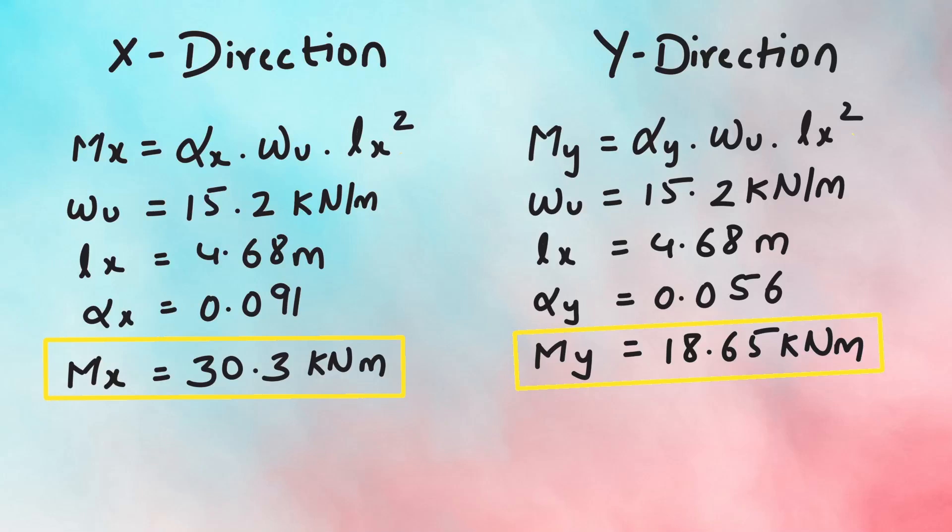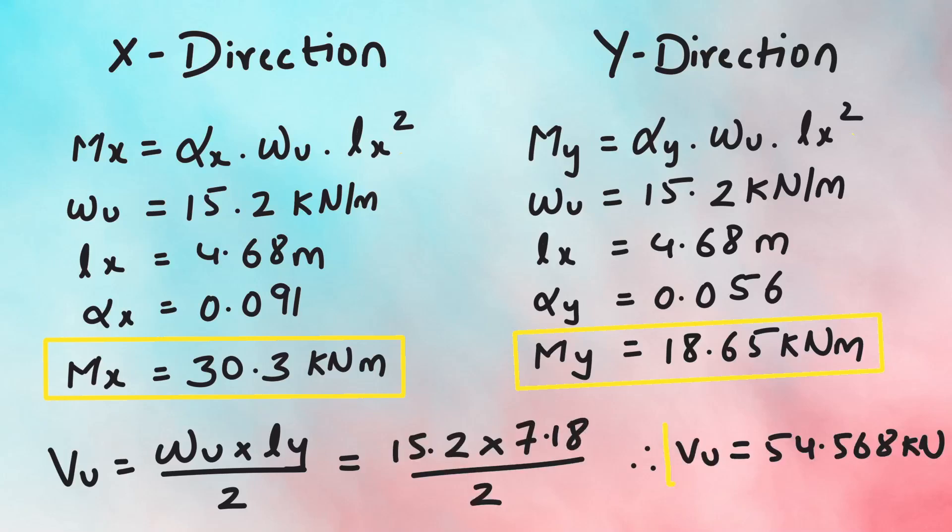The ultimate shear force Vu is calculated using the formula Wu into Ly by 2. Here, length Ly is taken since the shear force will be greatest in Y direction due to longer length. Substituting the values gives the ultimate shear force of 54.568 kN.